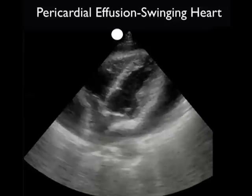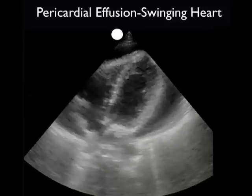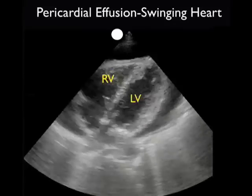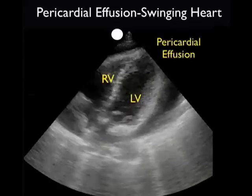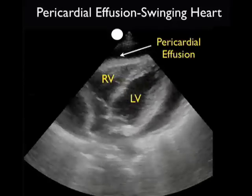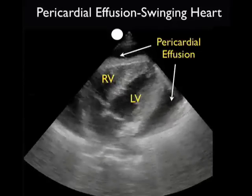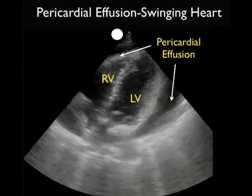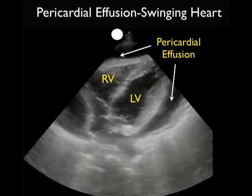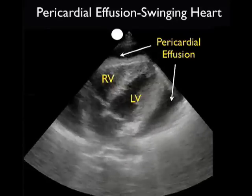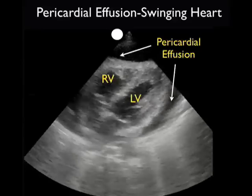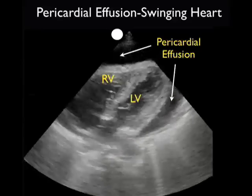Here's an interesting video clip of a patient who presented with acute shortness of breath. What we notice here is the right ventricle and the left ventricle closest to the screen, but we see a very large pericardial effusion circumferentially surrounding the heart. Notice the heart swinging back and forth in all the pericardial effusion. This gives rise to the phenomenon known as electrical alternans, or different-sized QRS complexes on the EKG.